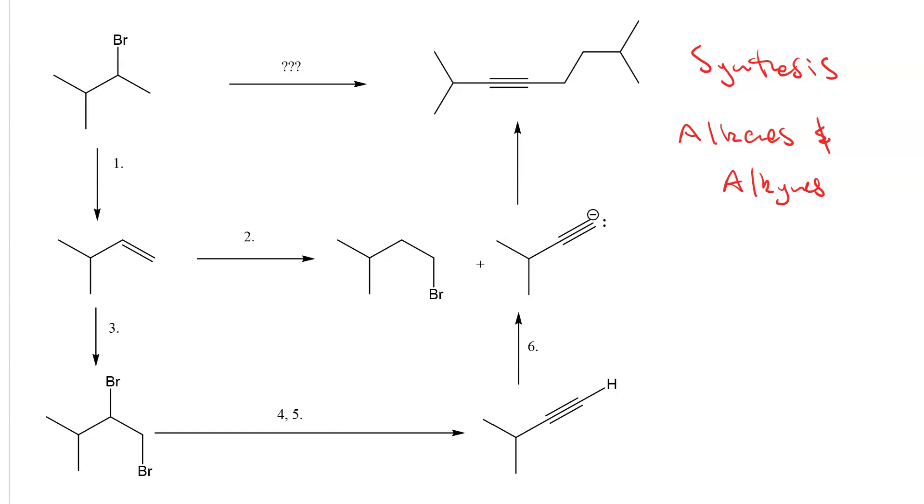In each step, we're going to supply the missing reagents to achieve our final desired product. This is a six-step transformation where we go from 2-bromo-3-methylbutane to this very long internal alkyne.